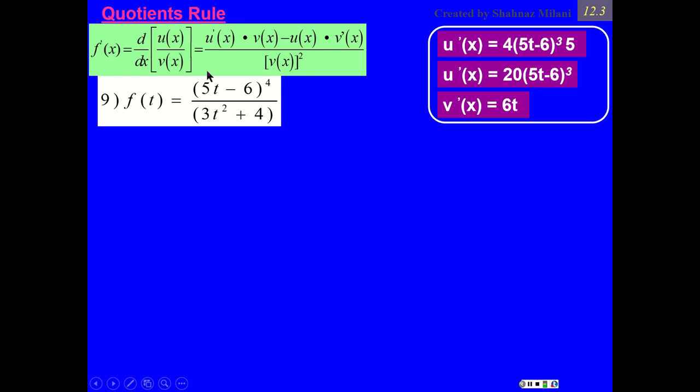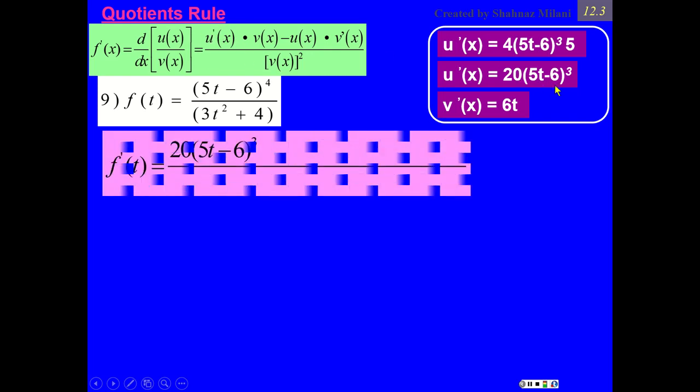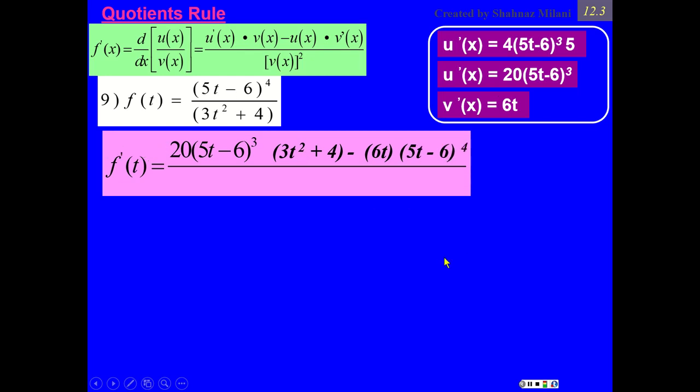Now, let's go by the quotient rule. Derivative of a top part, which is 20 times this parenthesis exponent 3 times my denominator, the carbon copy. If you have more than 1 term, keep it inside the parenthesis, then minus derivative of a denominator, which is 6t times my top part, with the exact same exponent, over denominator to the exponent 2.